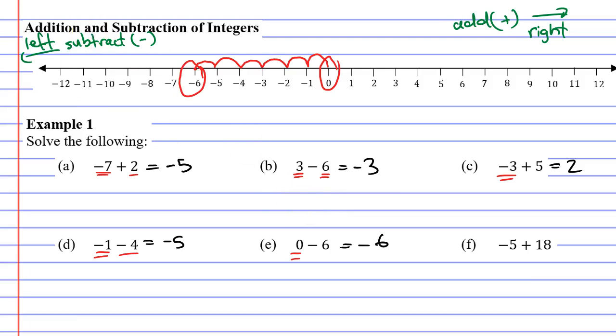And finally, question F. This one's going to have a lot of movement because we're adding 18. First of all, we're starting on negative 5. If we add 18, we're moving to the right.